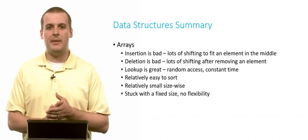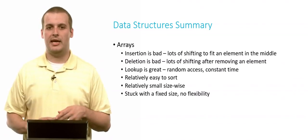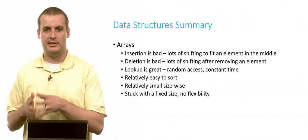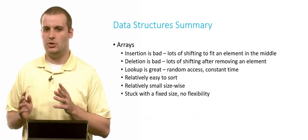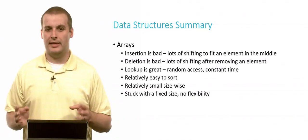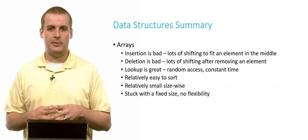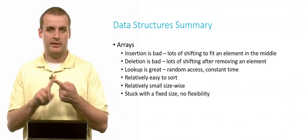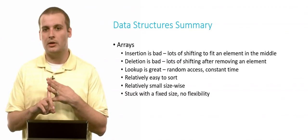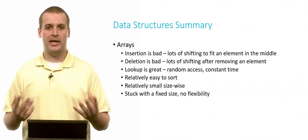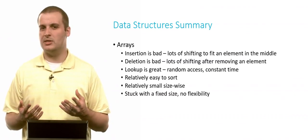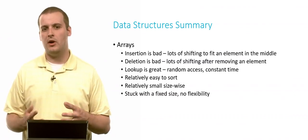Lookup, though, is great. We have random access constant time lookup. We just say 7 and we go to array location 7. We say 20, we go to array location 20. We don't have to iterate across. That's pretty good. Arrays are also relatively easy to sort. And every time we talked about a sorting algorithm such as selection sort, insertion sort, bubble sort, merge sort, we always used arrays to do it because arrays are pretty easy to sort relative to the data structures we've seen so far.